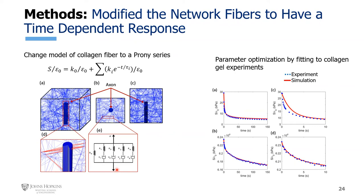The goal was to understand the effects of high-speed loading on embedded axons. We took the discrete fiber network models used previously, but instead of nonlinear springs, modeled each fiber using a Prony series — a four-component formulation with five springs and four dashpots in series and parallel — to capture viscoelastic force versus stretch behavior. Coefficients were obtained by fitting to experimental data from collaborators who stretched collagen gels at different rates and measured stress versus time curves. Networks without axons were optimized until their behavior matched the experiments, with the simulation fitting shown against four different experimental datasets.